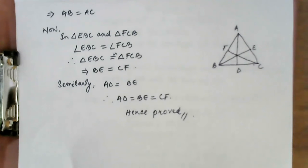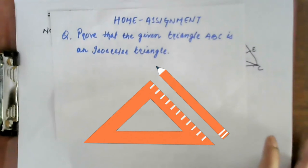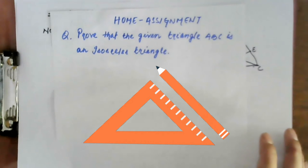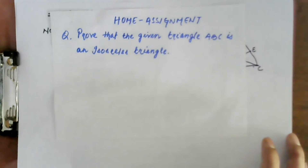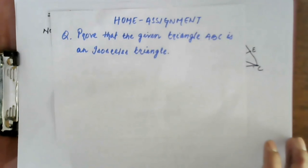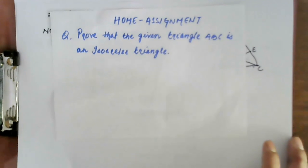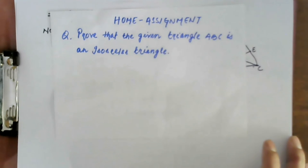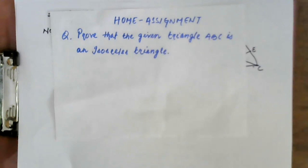Today I'll be solving only question number 6. Now for your home assignment: prove that the given triangle ABC is an isosceles triangle. Before, what I solved was an equilateral triangle where all three sides are equal, but for your home assignment you need to prove it is an isosceles triangle, meaning two sides are equal. Please write down and submit when asked. Thank you, see you in the next class.